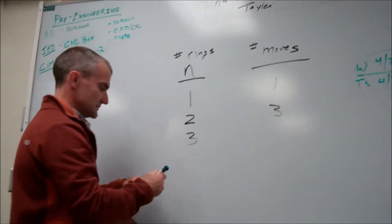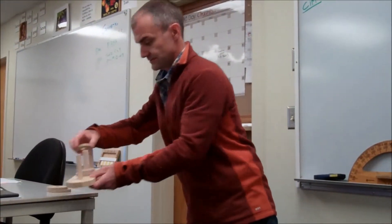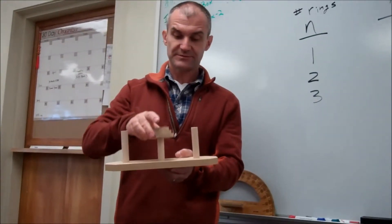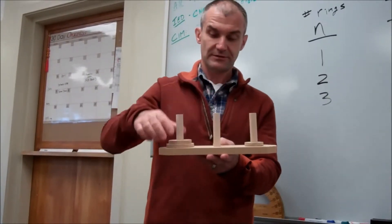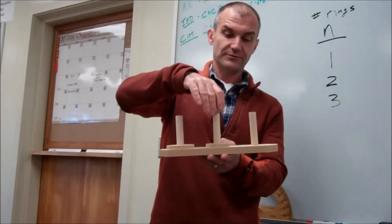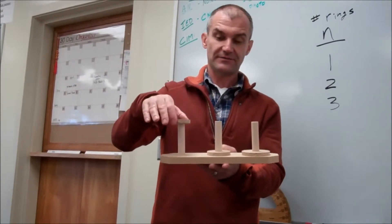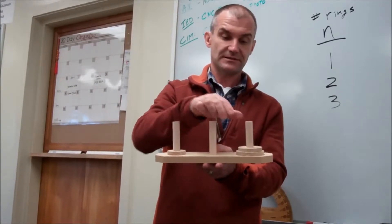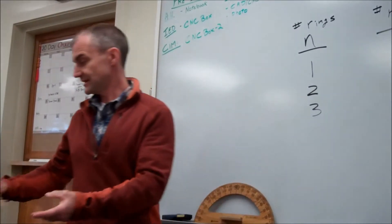Now let's try three rings. Let's see. So I'm starting with three rings. I'd make one move, two moves, three moves, four moves, five, six, seven. So it's three rings I could do it in seven moves.